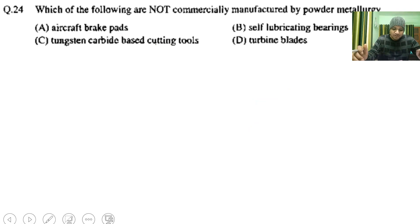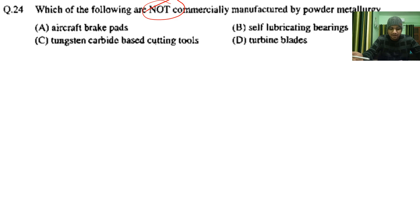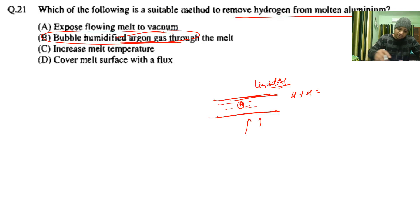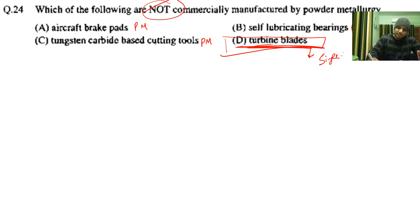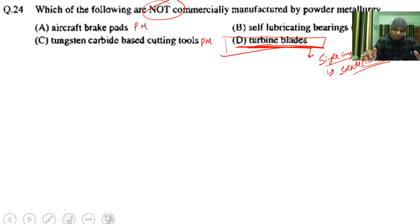Which of the following is NOT commercially manufactured by powder metallurgy? Aircraft brake pads are made by powder metallurgy, self-lubricating bearings are made by powder metallurgy, and tungsten carbide cutting tools are also made by powder metallurgy. However, turbine blades are NOT made by powder metallurgy because they operate at very high temperatures and are made as single crystal nickel by the solidification method. This question also relates to physical metallurgy but is categorized under manufacturing processes.